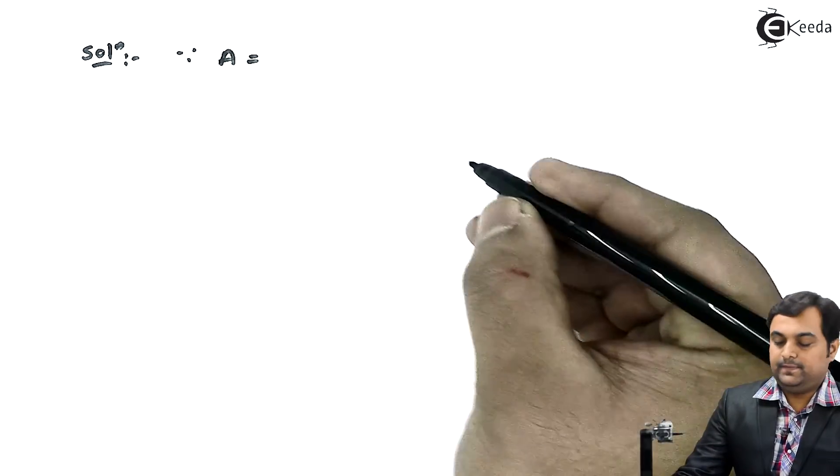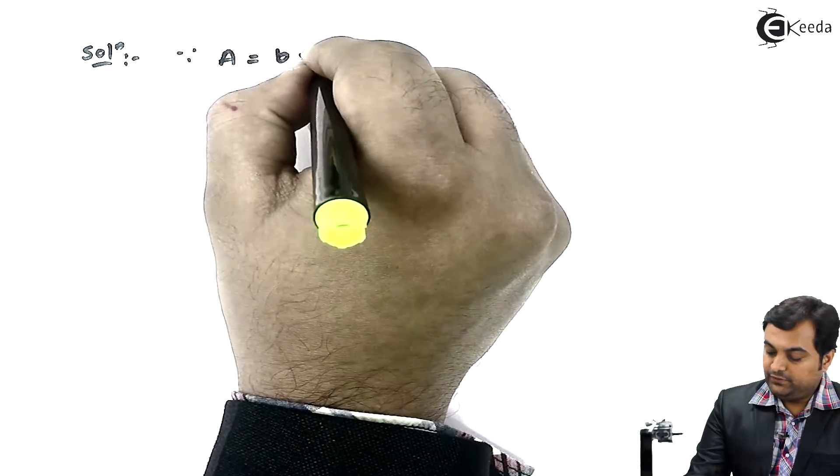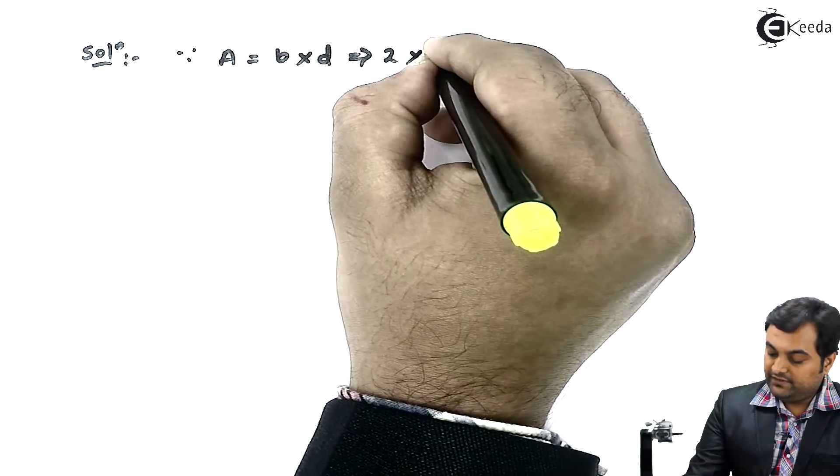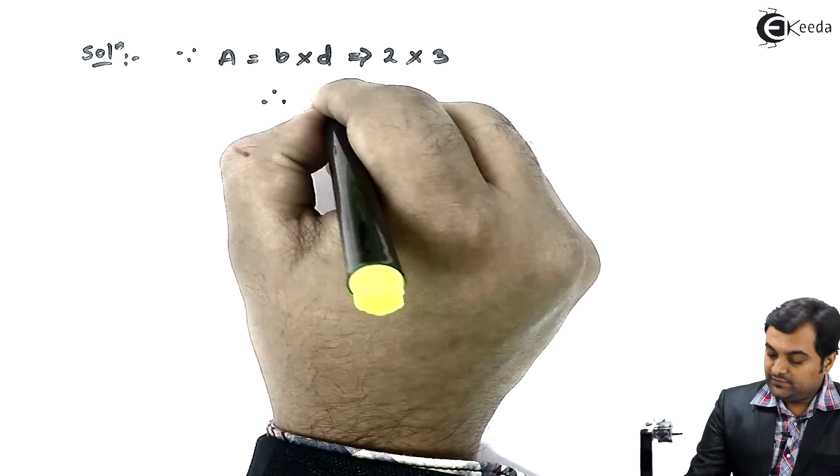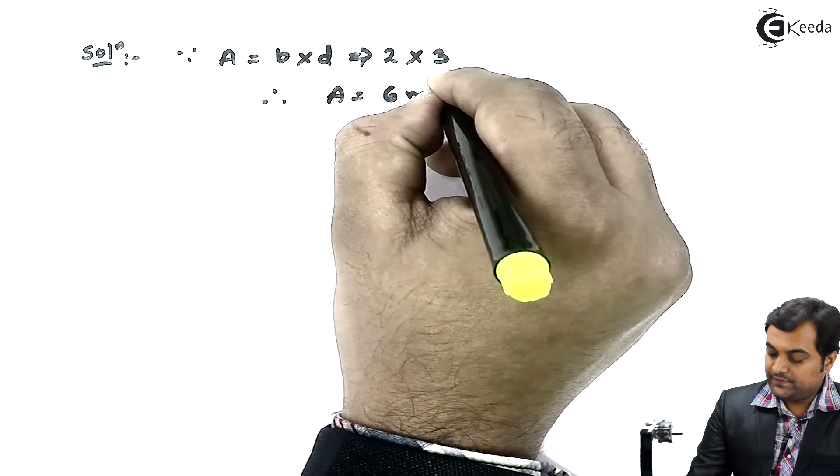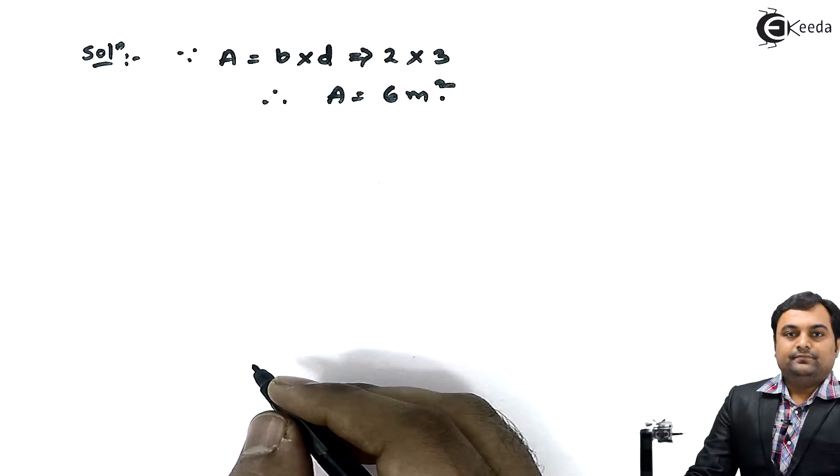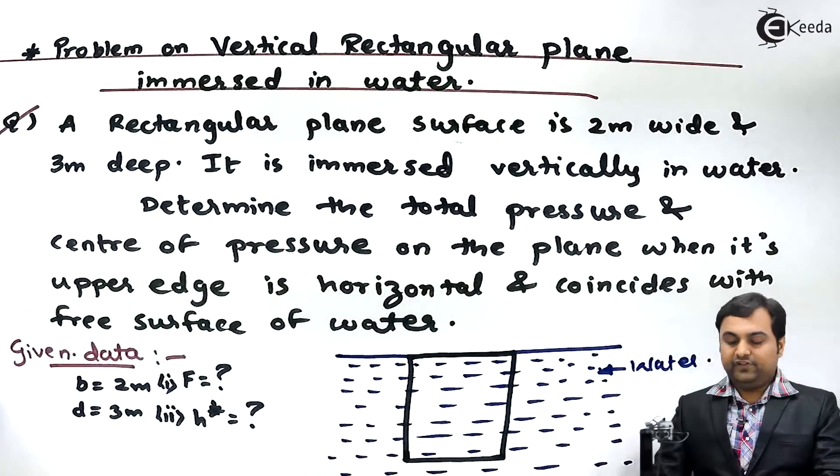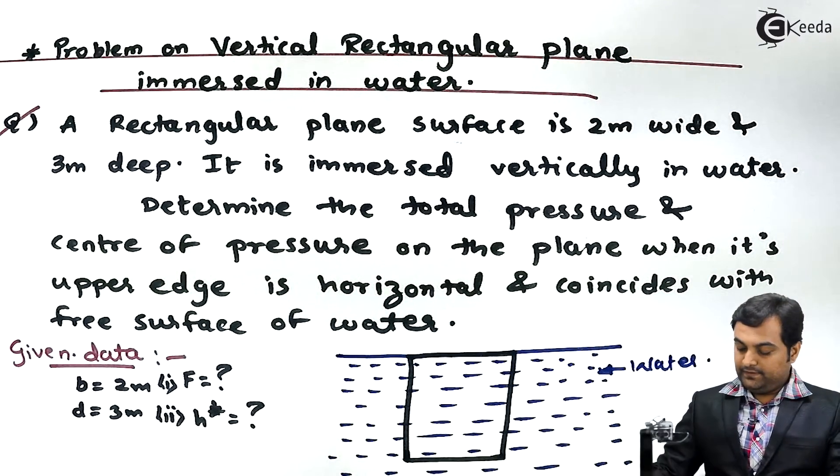Solution: Since area of the rectangle is given as B into D, B is 2 and D is 3, so area comes out to be 6 meter square.